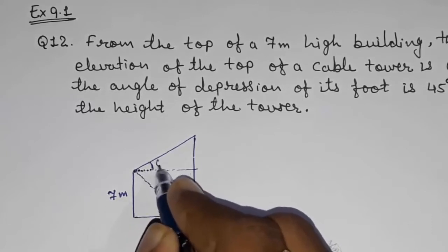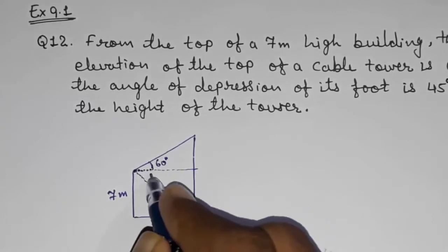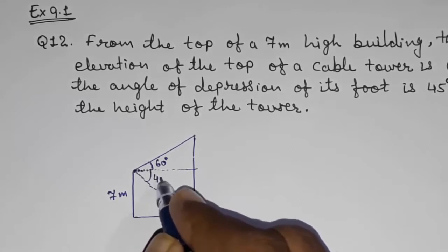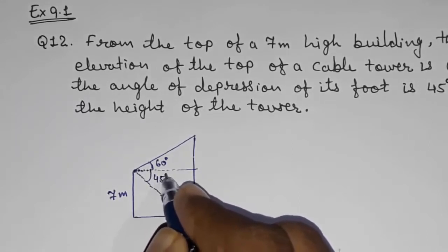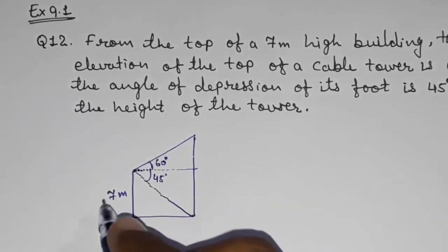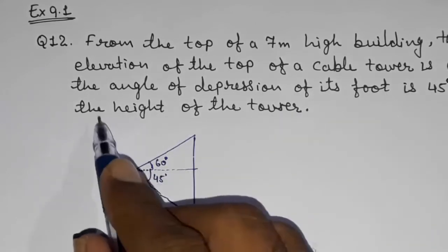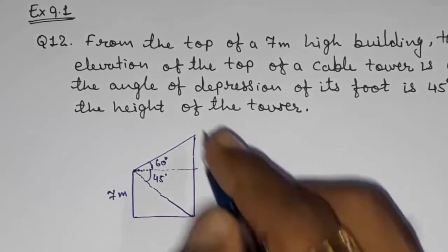This will be our angle of elevation that is 60 degrees and they told us angle of depression. This will be our angle of depression that is 45 degrees. They told us determine the height of the tower. Means we have to find out this whole height.